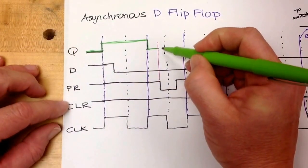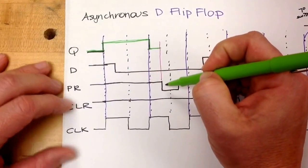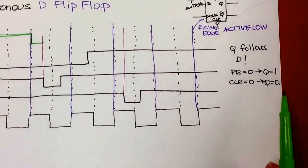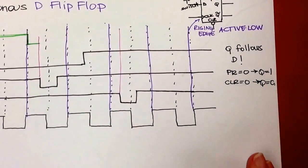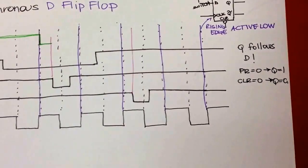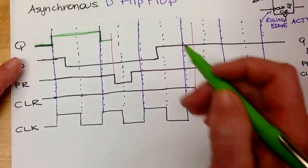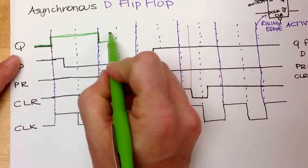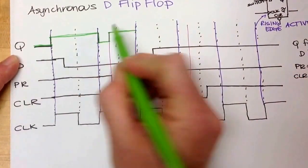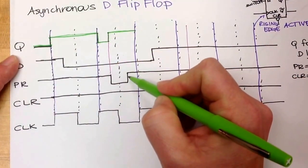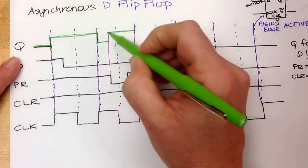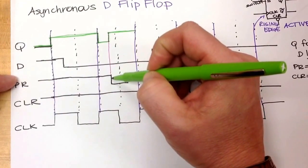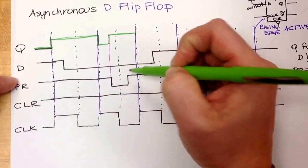I get to a place where the preset has been activated. The preset goes to zero, so Q is going to go to one immediately — it's asynchronous, it doesn't wait for the clock. So it's going to go back up and travel across. It doesn't respond when I deactivate it. It stays there — it's only triggered by making the preset equal to zero, not by making the preset one.